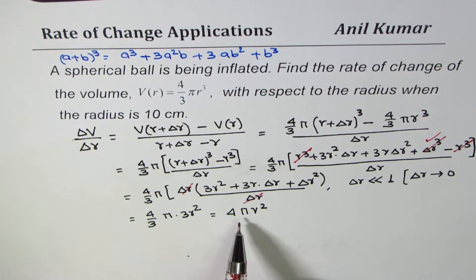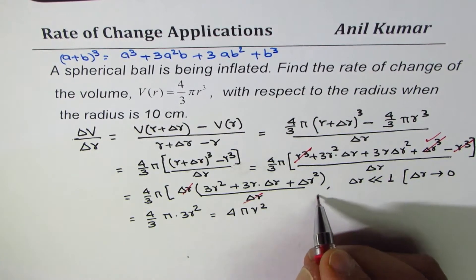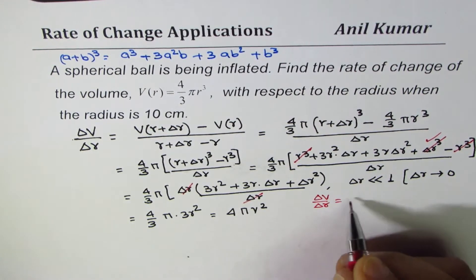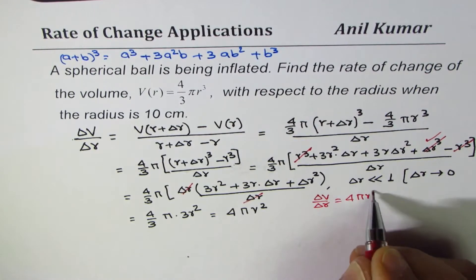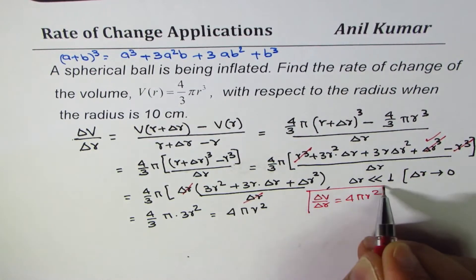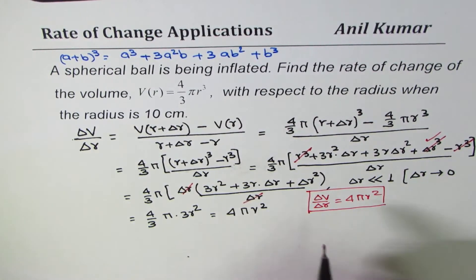So that's a very important formula we have derived. A formula which says rate of change of volume with respect to radius is same as the surface area at that time. So what we have found here is that ΔV/ΔR equals 4πR².